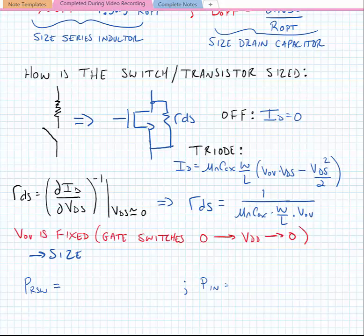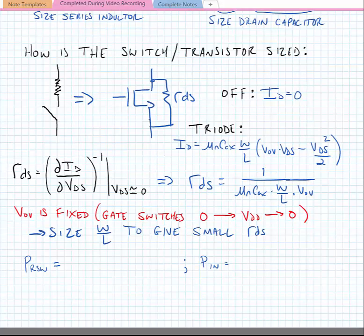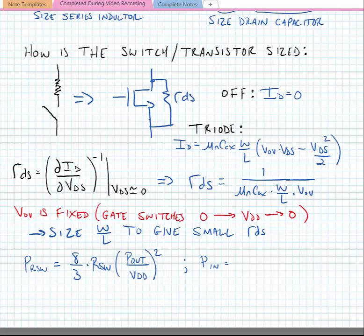Now we know that we'd ideally like to have 0 resistance in our switch. So what we're going to do is try and size W over L to give a small RDS. Now we can find the power dissipated in the resistance is given by the following. Our power dissipated in the resistance is equal to 8 thirds times RSWITCH times POUT divided by VDD squared. So we can see that the power dissipated in the switch is proportional to 1 over W. So this tells us we want to make W big.